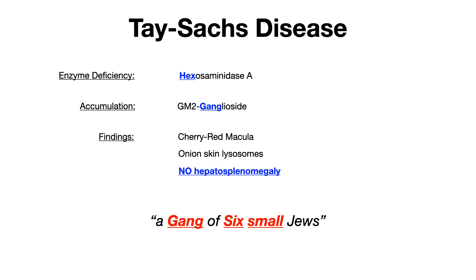Another high-yield tip: any disease with a hyphen in the name also features a cherry-red macula. Cherry-red is hyphenated, and Tay-Sachs is hyphenated — so that's an easy way to remember it. And just like Tay-Sachs is hyphenated, so is Niemann-Pick disease, which also has a cherry-red macula, as you'll see next.